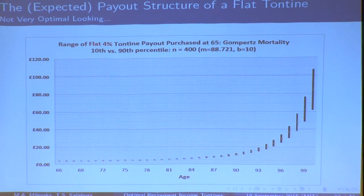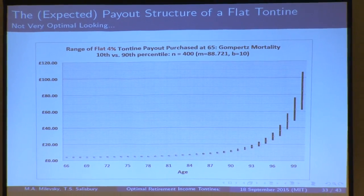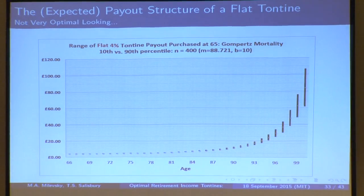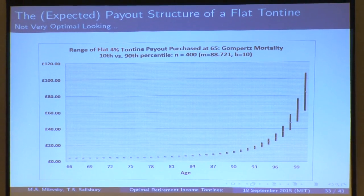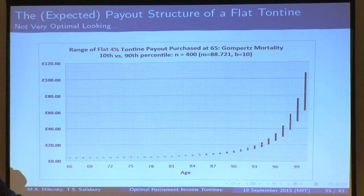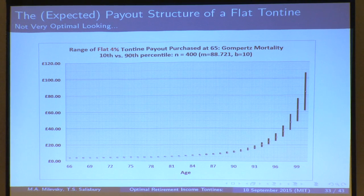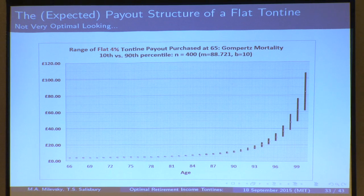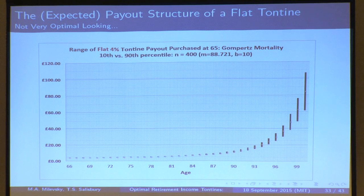This is the payoff structure of a Lorenzo Tonti tontine. You get very little early on — you're getting 8%. When people start to die very rapidly, you get these big coupon payments. This is a suboptimal payment stream — consumption increasing very rapidly at the very end. This is not smooth consumption; there's wide variation. So how do we fix the payout structure in order to maximize utility?